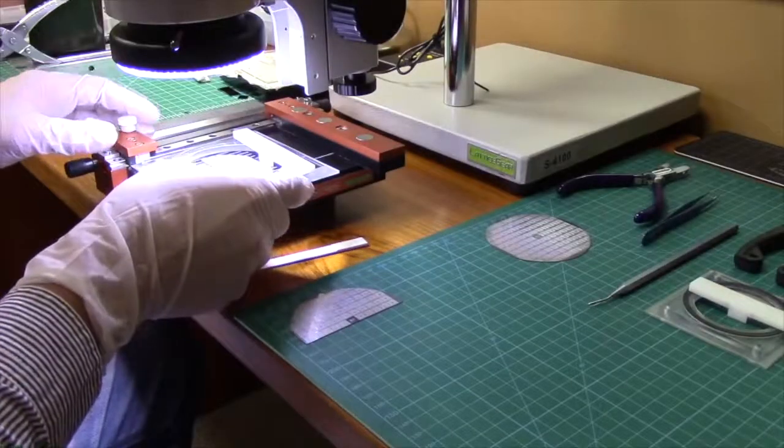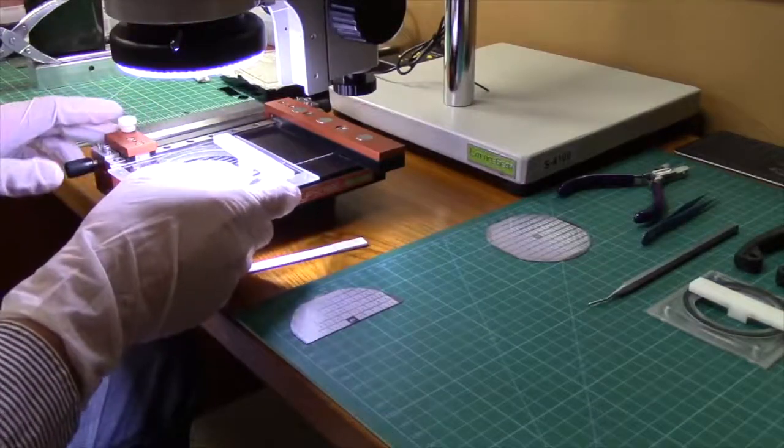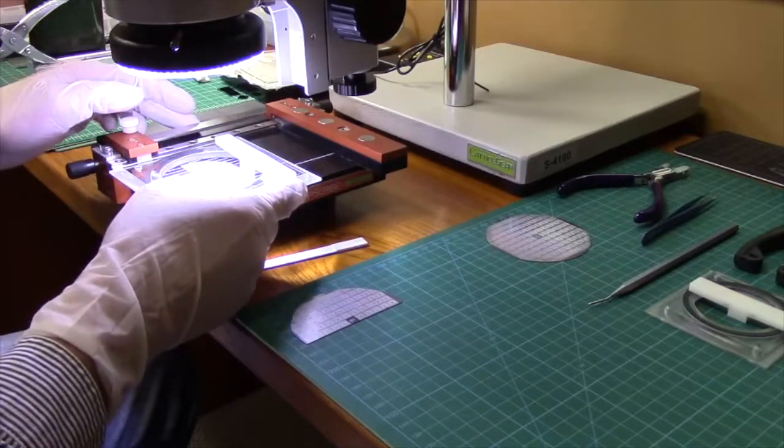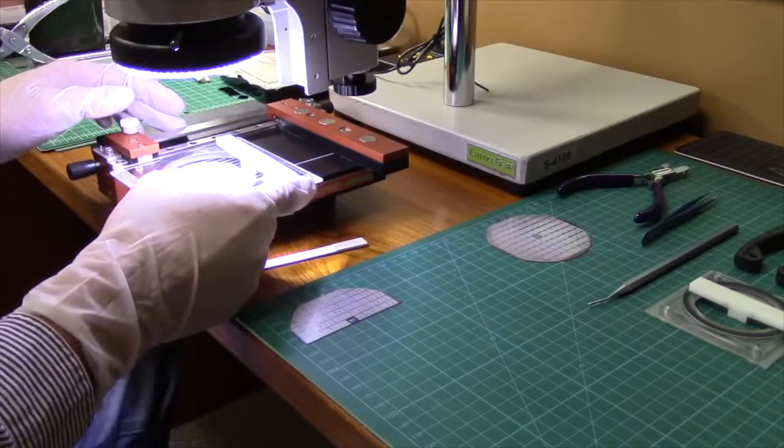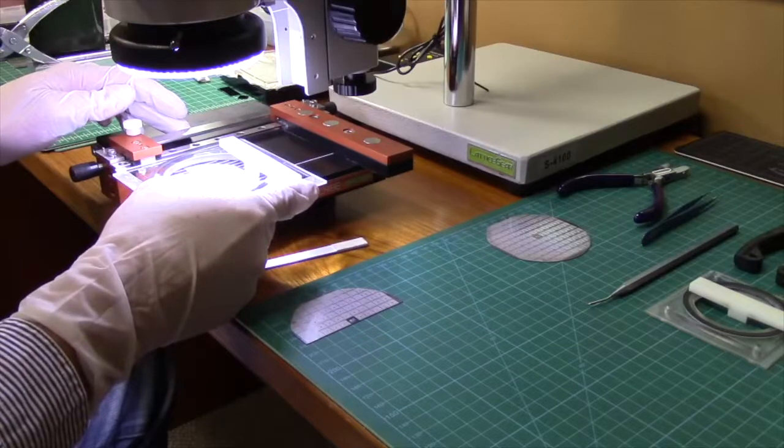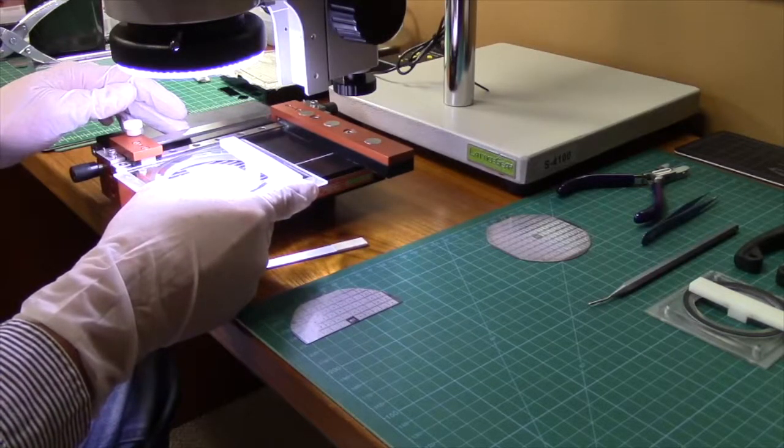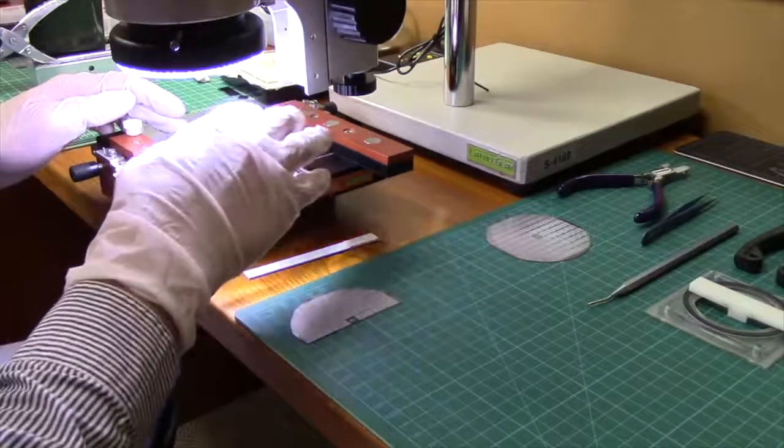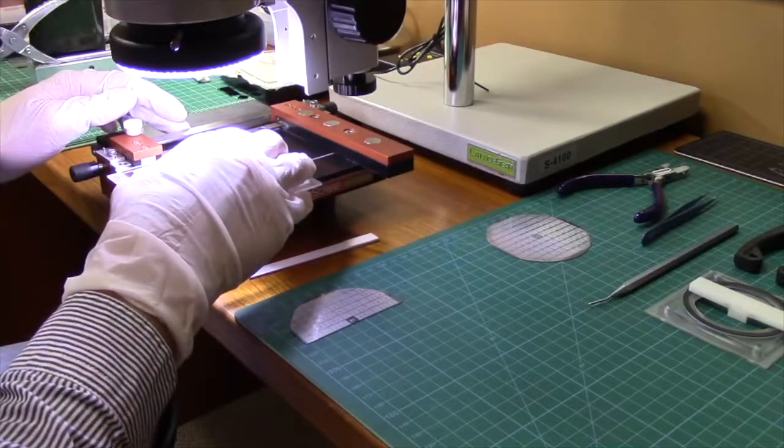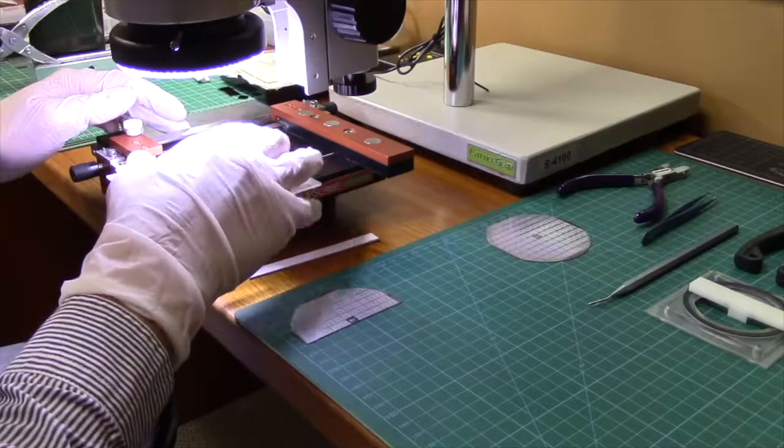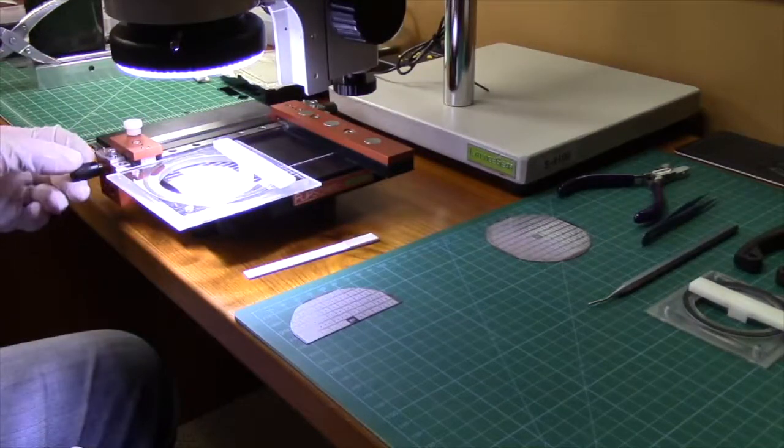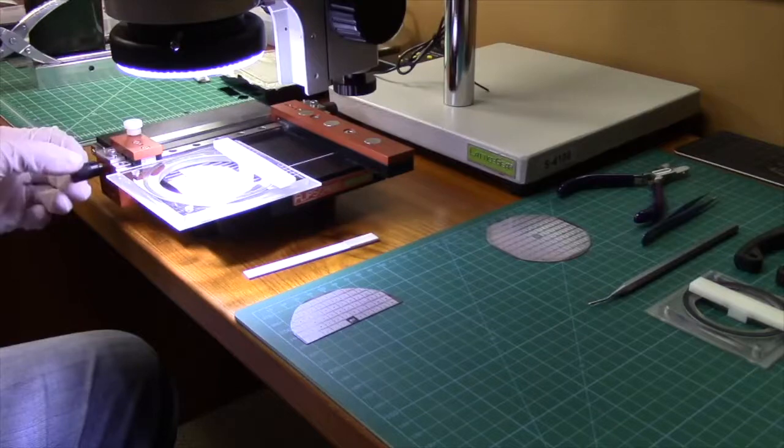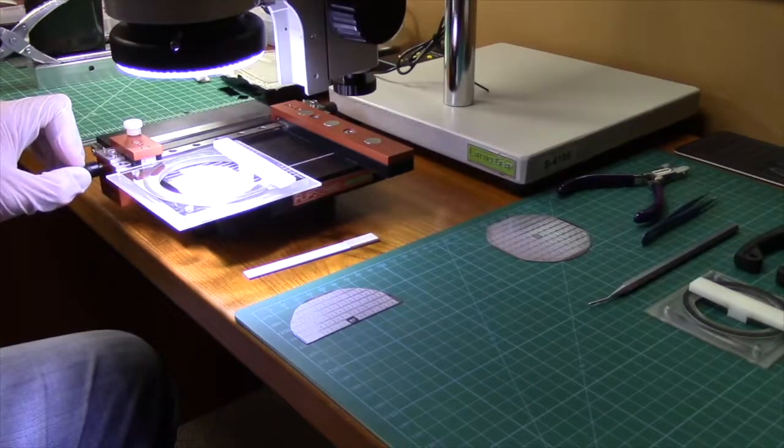With the scribe set, we will now align the guides to the location we wish to scribe. Using the stereoscope, locate the location you wish to place the scribe and align it to the scribe tip. For this example, we are using the lines between the dies patterned. Once aligned, lock the guide bar into place.